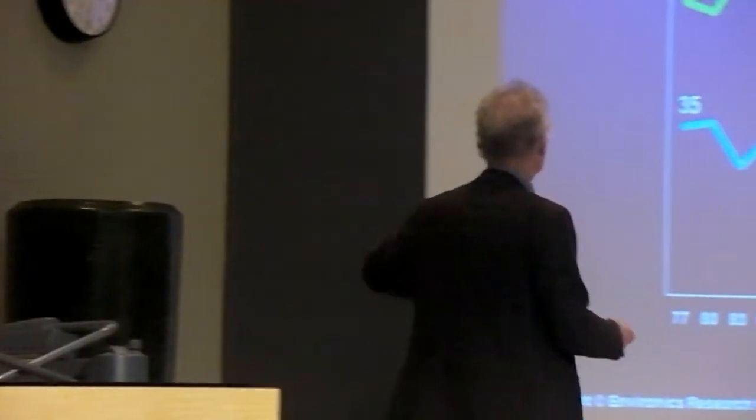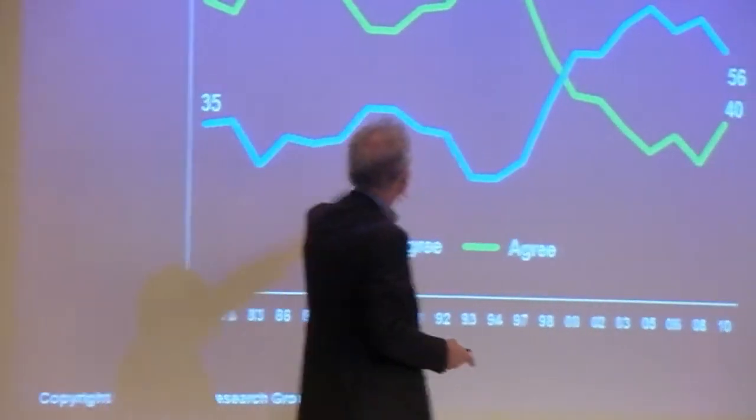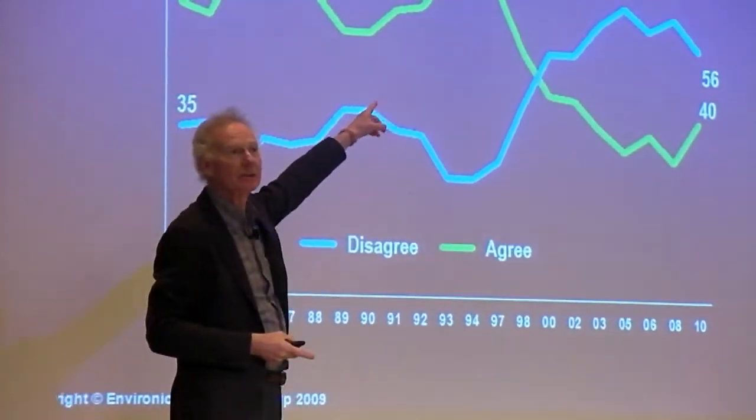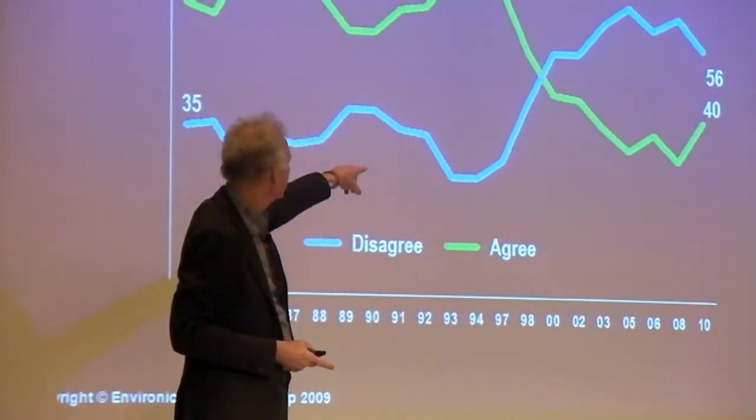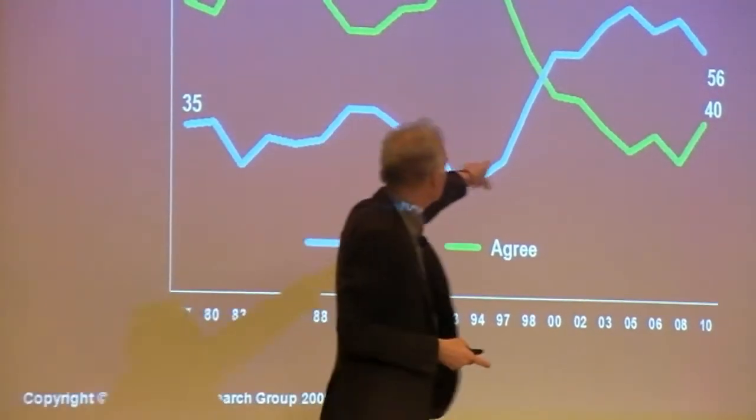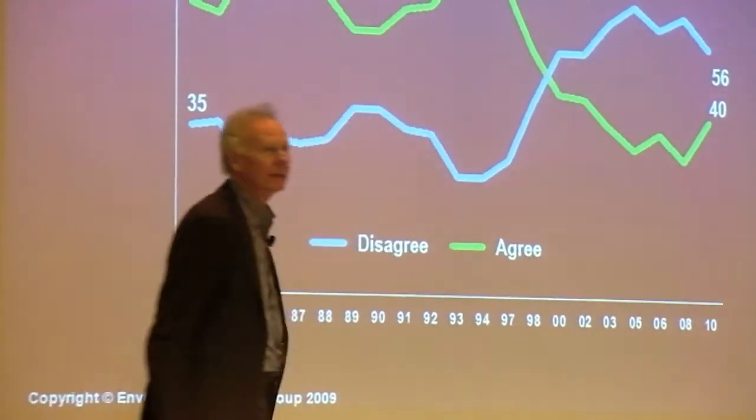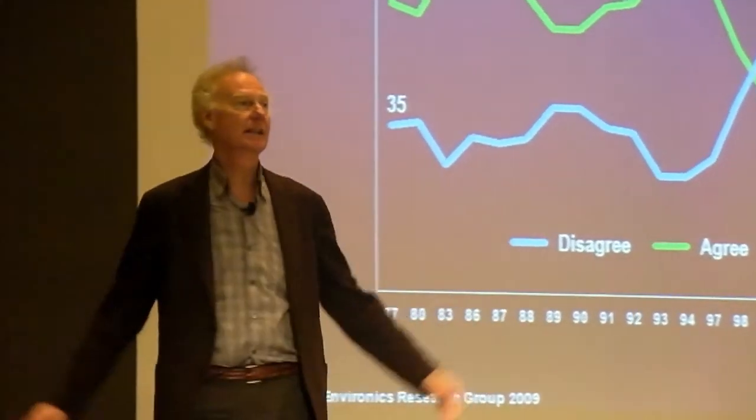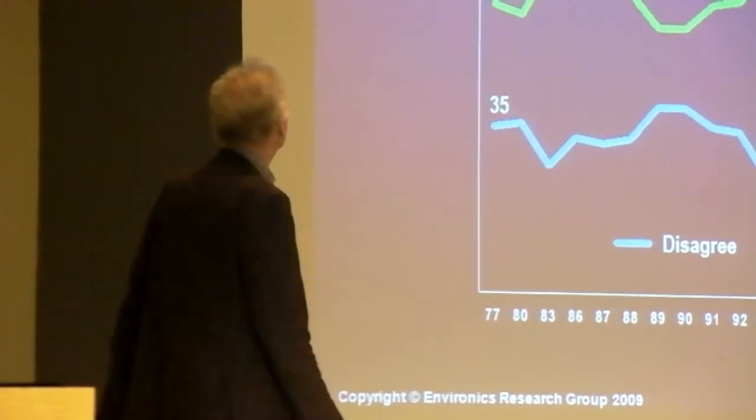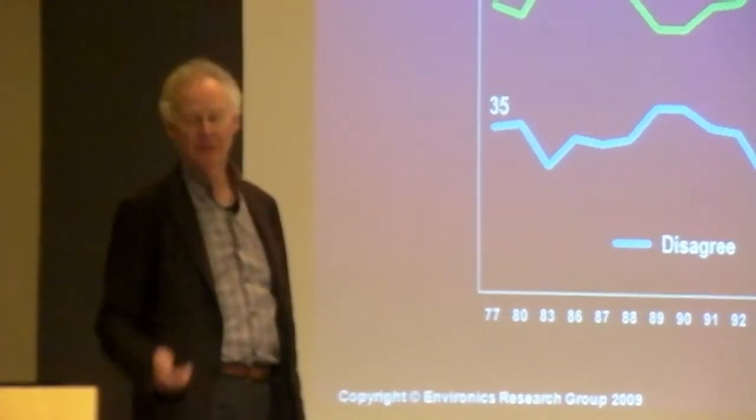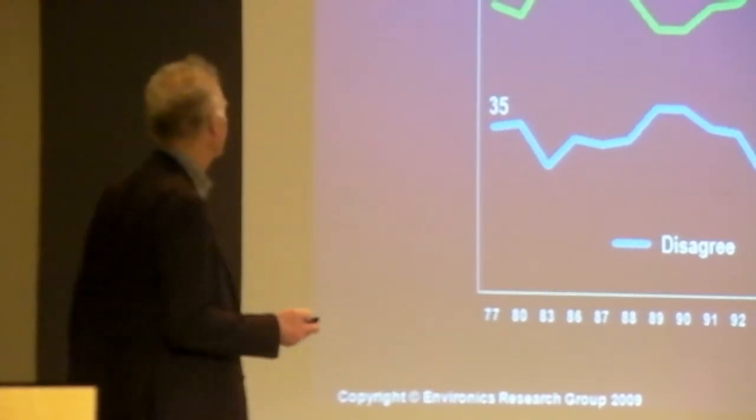The majority disagree that there's too much immigration, but there has been a recent spike in concern. So you can see throughout the 1980s and into the 1990s, most people agreed we had too much immigration in Canada. But as time went on, getting into the new millennium, those who agreed declined, and actually over the last decade, it's been the minority, the majority of people disagreeing with the statement that we have too much immigration in Canada.